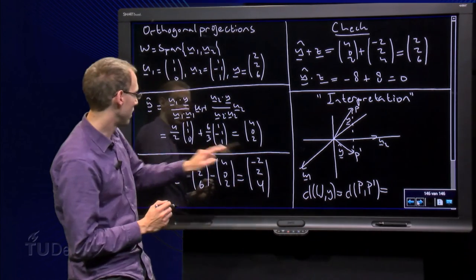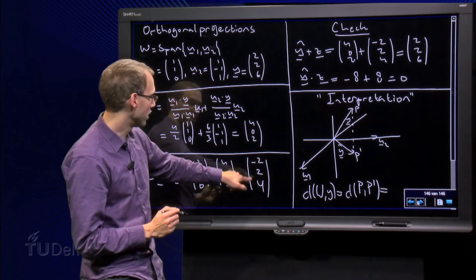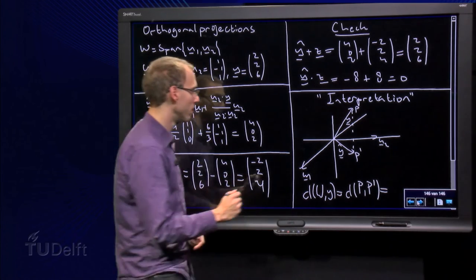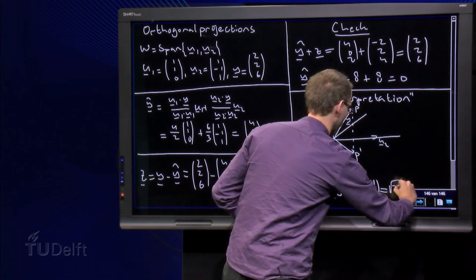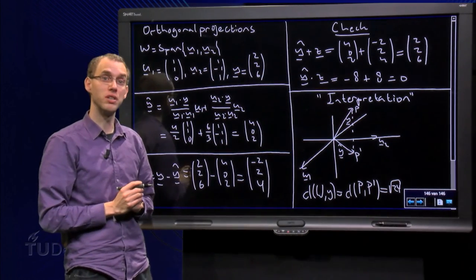Let's see: the length of z equals the square root of 16 plus 4 plus 4, which is 24. So the distance equals the square root of 24. So that's how you can use this.